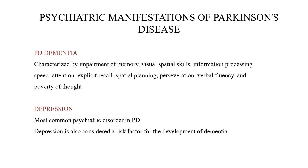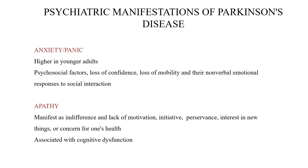Psychiatric manifestations of Parkinson's disease include: dementia — characterized by impairment of memory, visuospatial skills, information processing speed, attention, explicit recall, spatial planning, perseveration, verbal fluency, and poverty of thought. Depression is the most common psychiatric disorder in Parkinson's disease and is also considered a risk factor for dementia. Anxiety and panic are higher in younger adults. Psychosocial factors include loss of confidence, loss of mobility, and impaired non-verbal emotional responses to social interactions. Apathy manifests as indifference, lack of motivation, reduced initiation and perseverance, decreased interest in new things, reduced concern for one's health, and is associated with cognitive dysfunction.